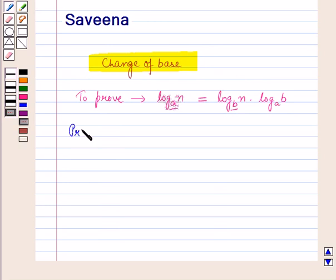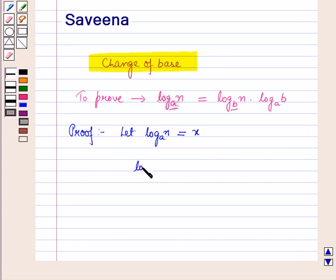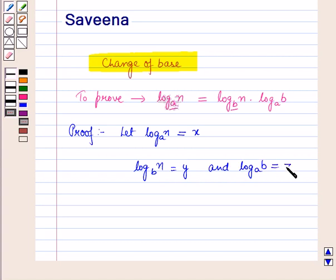Now, let us start with its proof. Let log N to the base A be equal to X, log N to the base B be equal to Y, and log B to the base A be equal to Z.